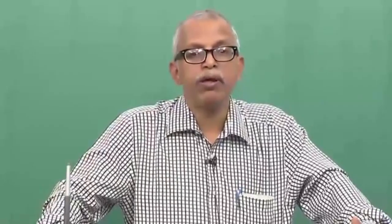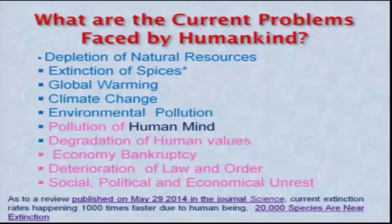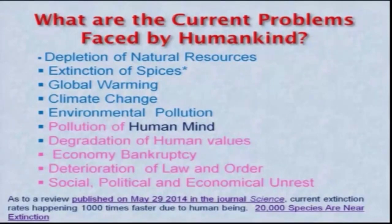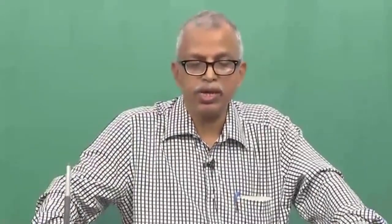India is having one hundred thirty crore people, but where are the human beings? They do not have the qualities of human beings — certain qualities are required to distinguish them from animals. There is also the problem of economic bankruptcy. If you look at the economy of the entire globe, not only India — it is basically gambling on shares. There is no constancy in that, so we are in deep trouble. Deterioration of law and order is not only in India but across the globe, with social, political, and economic unrest and a lot of unemployment-related problems.